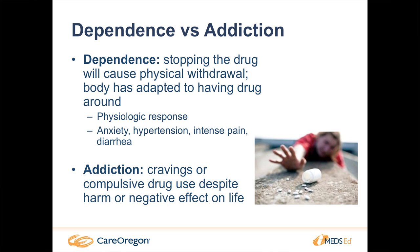I want to briefly touch on the difference between dependence and addiction. Dependence is a physical dependence on the drug — a person can be dependent on opioids, meaning they would have withdrawal if taken off them quickly. Addiction is more of the craving and compulsion. They're two very different things; a person who is not addicted to opioids can still be physically dependent on opioids with chronic use.